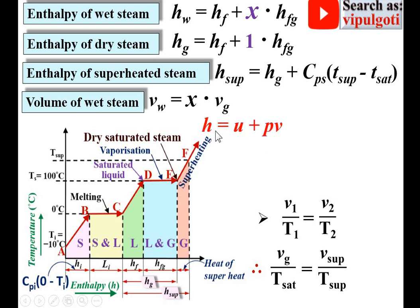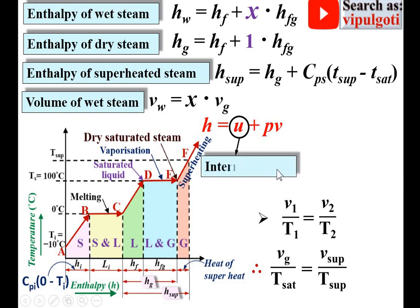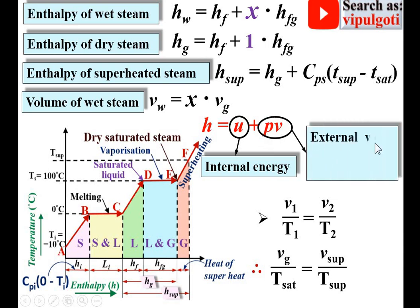The next and very important formula is enthalpy expressed in terms of internal energy and flow work, that is the external work during evaporation. So enthalpy H equals U, the internal energy of the steam, plus Pv, the external work during evaporation.